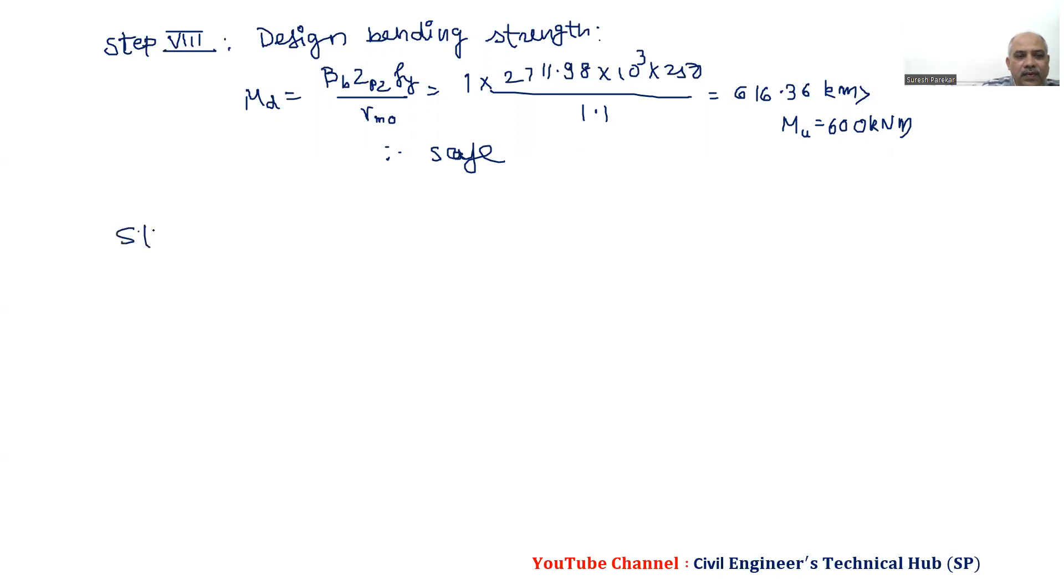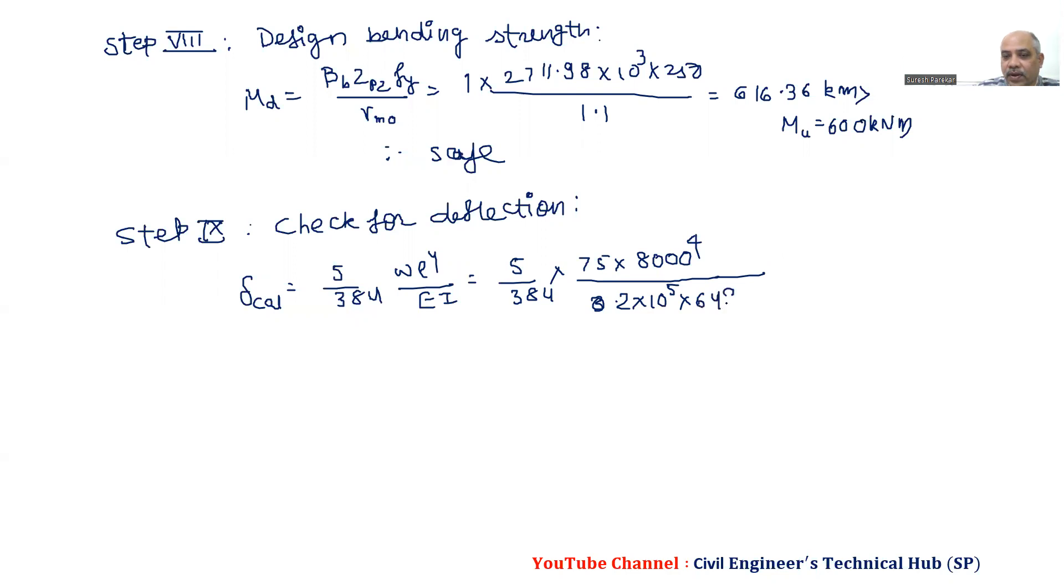Then we have to check minimum—this check, that is check for deflection. Check for deflection. We have formula: delta calculated, UDL throughout, 5 by 384, WL to the power 4 upon EI. 5 by 384, W is 75, L we have 8000 to the power 4, upon E—we have already mentioned—2 into 10 to the power 5, and value of I is 648.95 into 10 to the power 6. And then if we solve this, we will get this value: 20.55 millimeters.